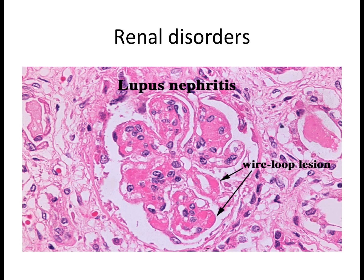Clinically in lupus nephritis, you will see painless proteinuria and hematuria — protein and blood in the urine. This can progress to glomerulosclerosis (stiffening of the glomerular membranes), nephrotic syndrome, and hypertension, all of which can eventually lead to renal failure.